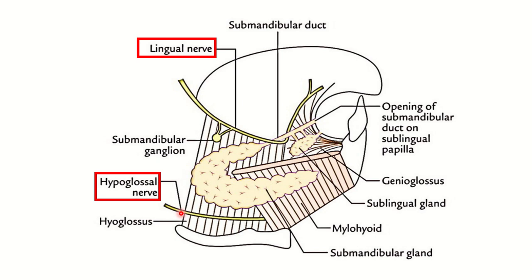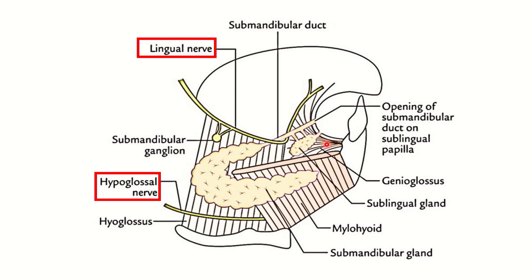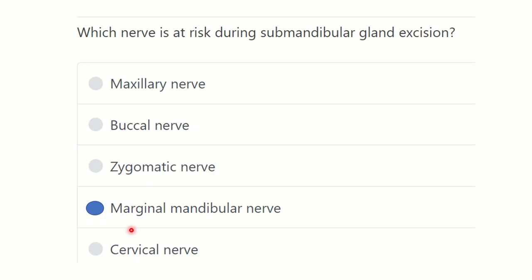Here we can see the hypoglossal nerve, the lingual nerve, and the marginal mandibular nerve. There is an important mnemonic: MALIA — MA for marginal mandibular nerve, LI for lingual nerve, and SA for hypoglossal nerve. Through this mnemonic it is very easy to remember the nerves which may get damaged during submandibular gland excision.